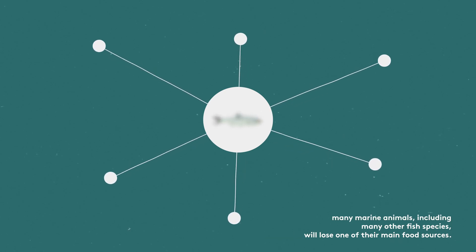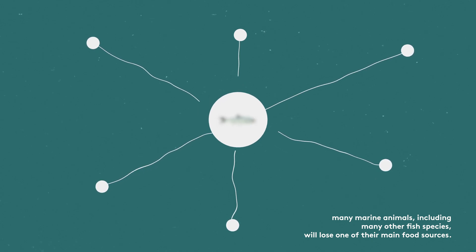This will, of course, have consequences. If anchovies disappear from the Humboldt system, many marine animals, including many other fish species, will lose one of their main food sources.